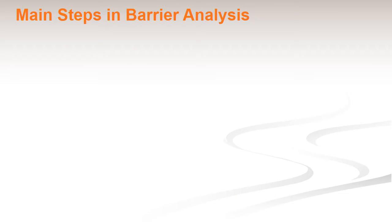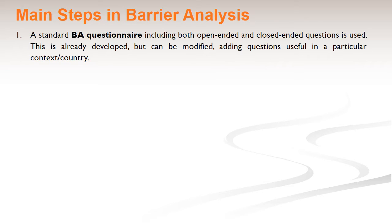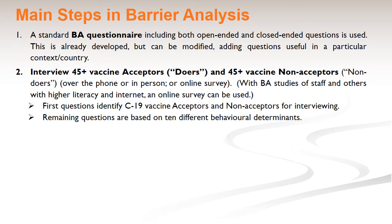The main steps in barrier analysis are quite straightforward. First, a standard barrier analysis questionnaire including both open-ended and closed-ended questions is used. This has already been developed for vaccines and for many of the other behaviors that you'll be studying, but even those can be modified by adding questions that are thought to be useful in a particular context or country. Next, you interview 45 doers and 45 non-doers either over the phone, in person, or for certain populations through an online survey as being done in the U.S. right now. With barrier analysis studies of staff and others with higher literacy, respondents can receive a link to fill out an online survey and we have some examples of those tools if you need them.